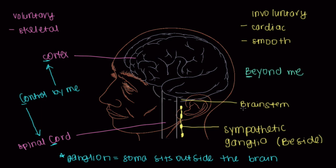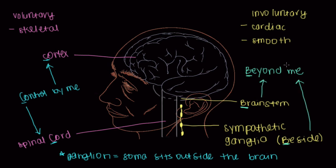And so if it's beyond me, I'm going to have to use either the brain stem, or neuronal tissue that sits beside the spinal cord, in order to be able to cause involuntary contraction of muscle. So great, that's voluntary versus involuntary control.